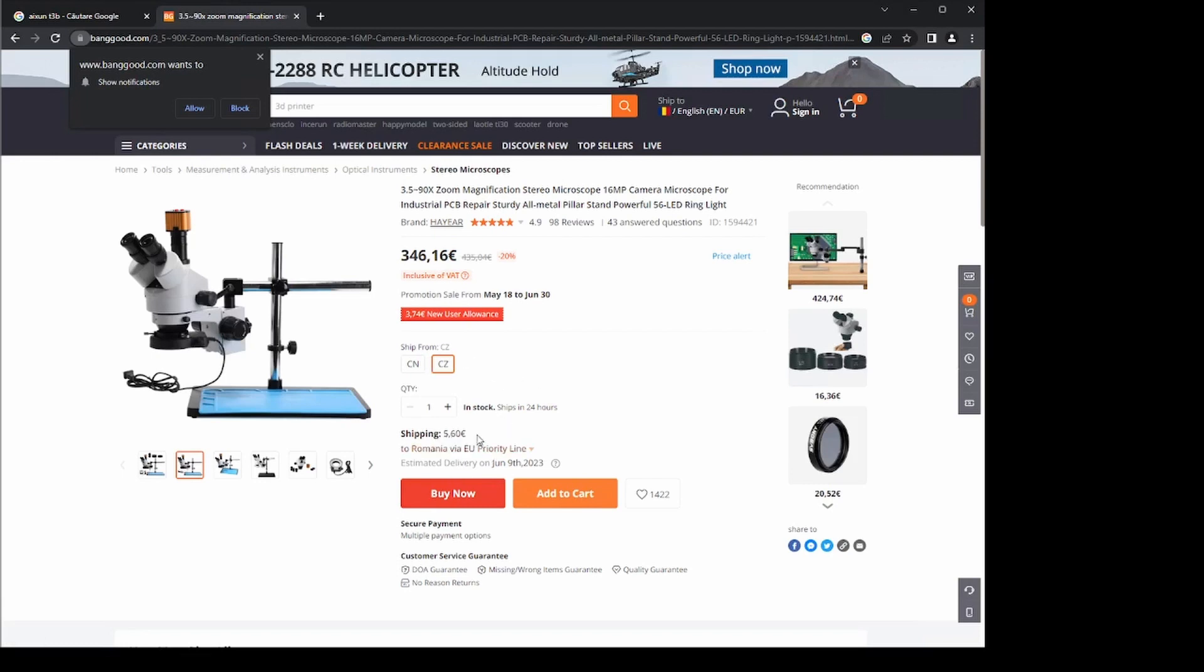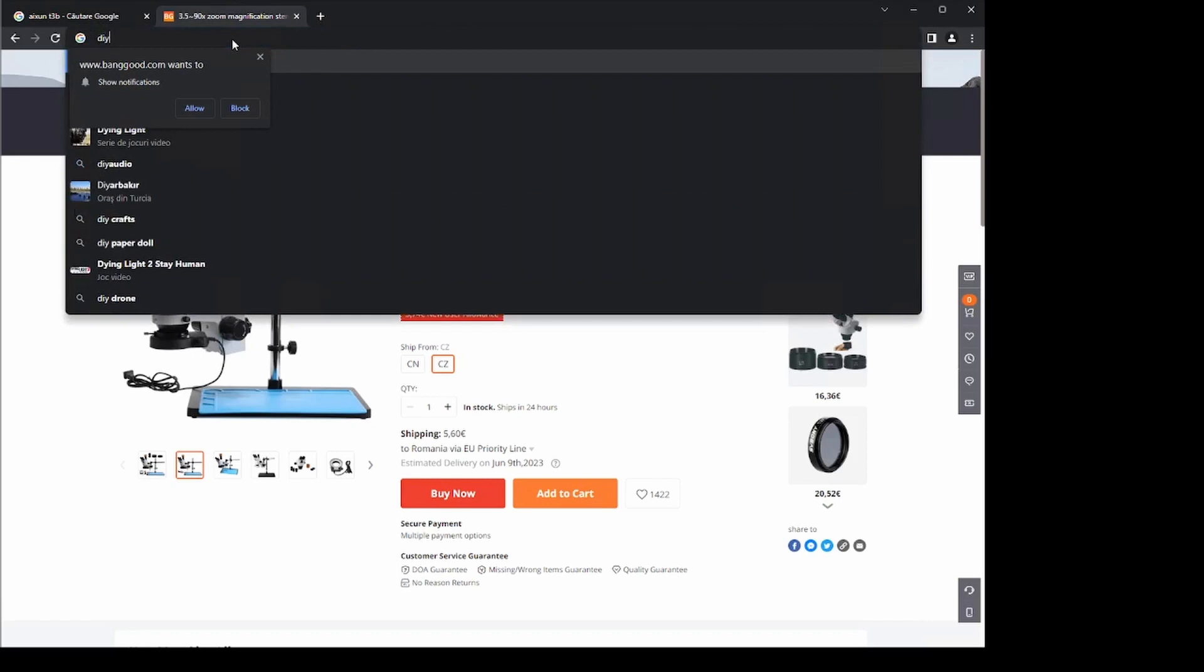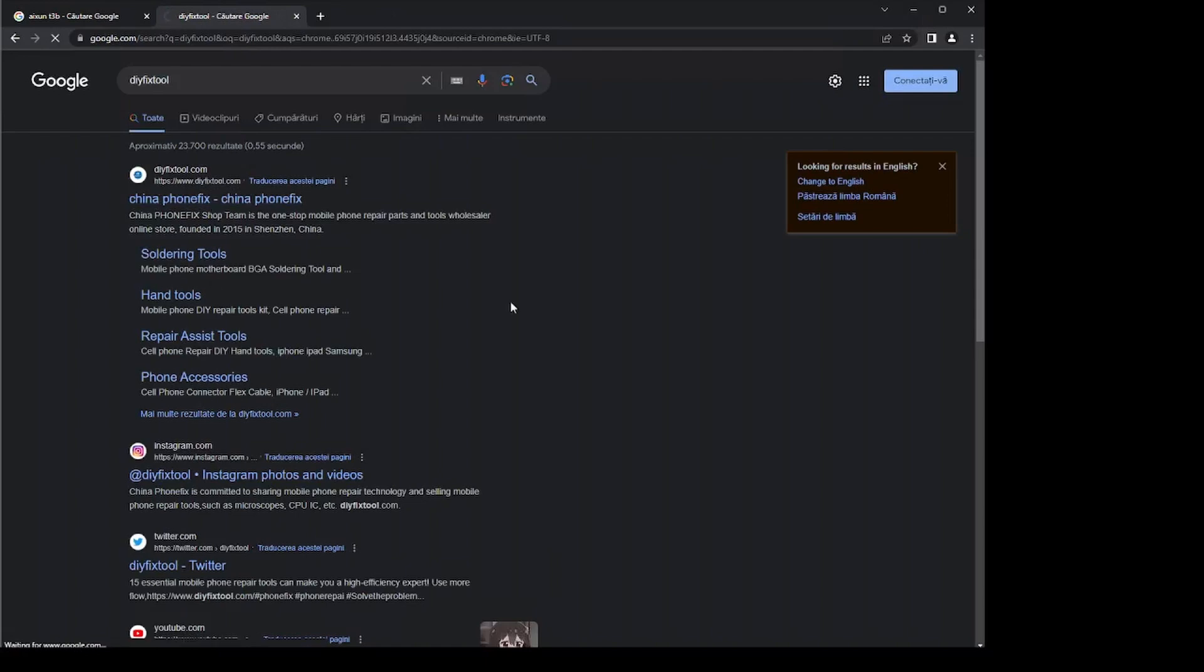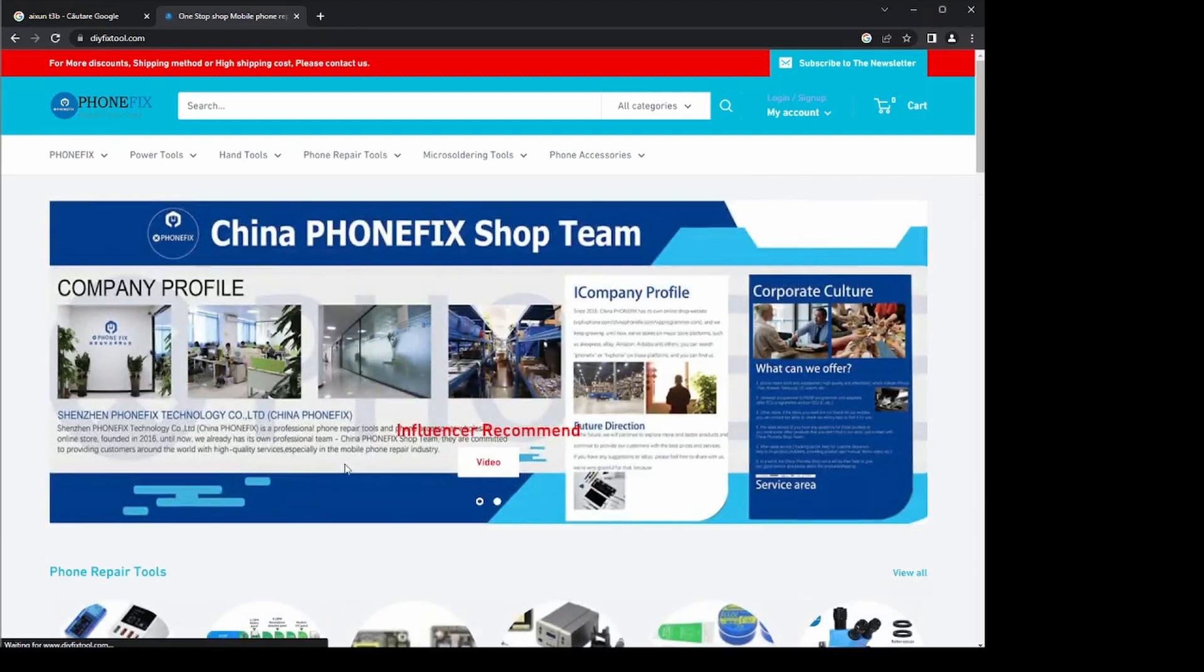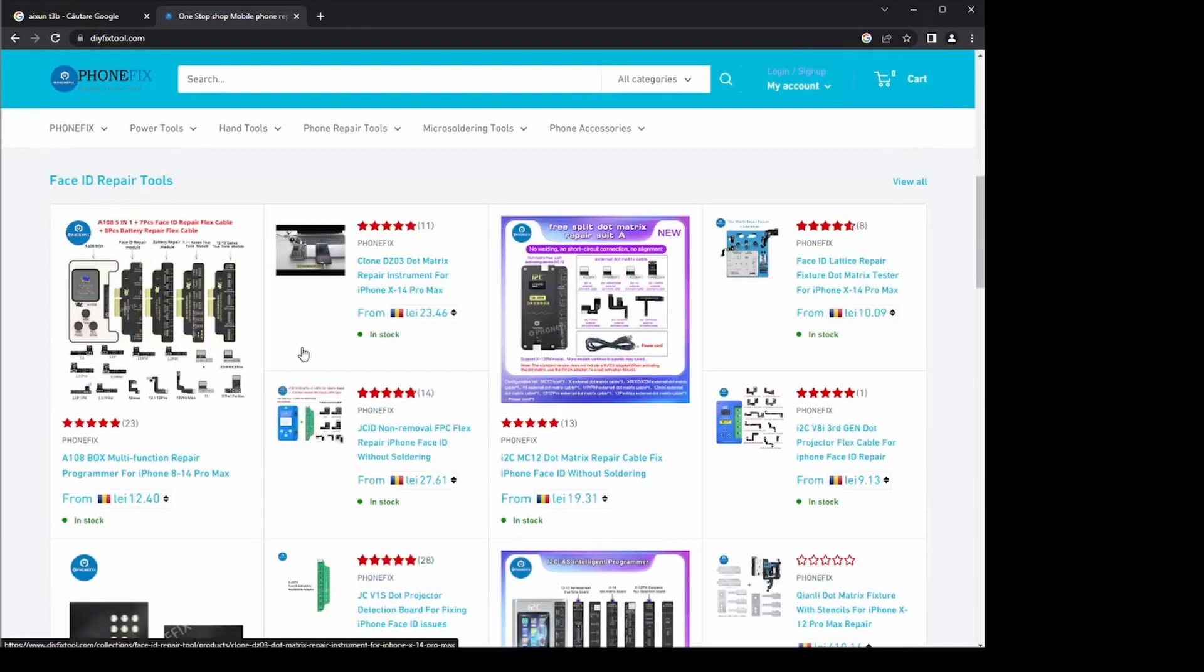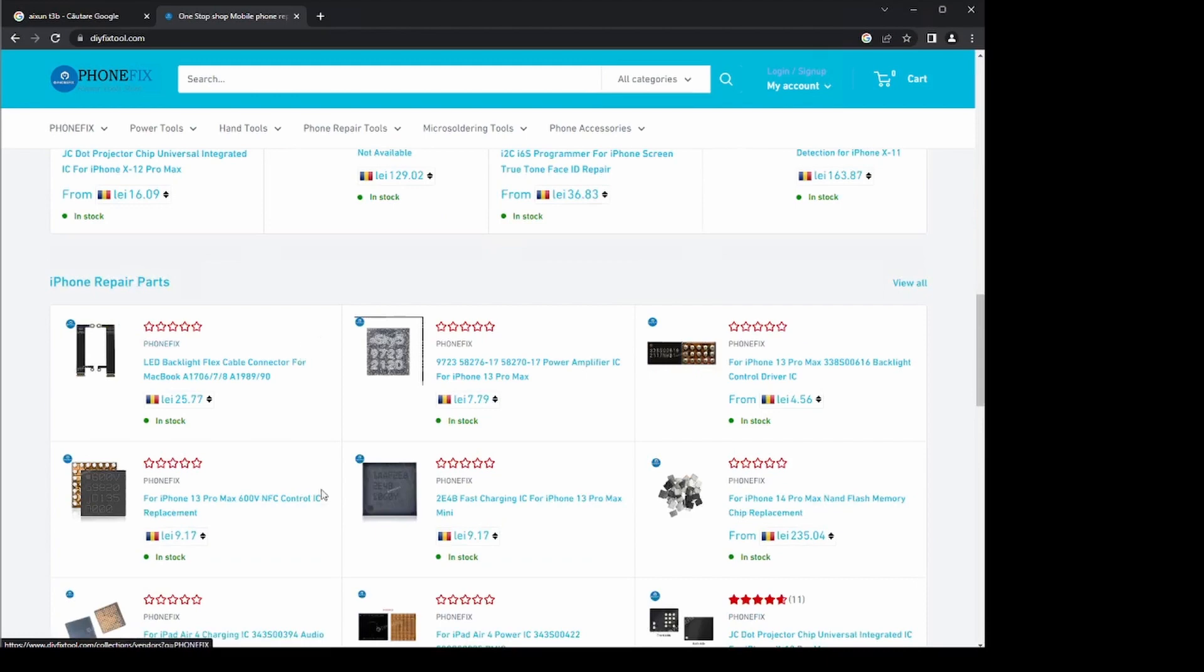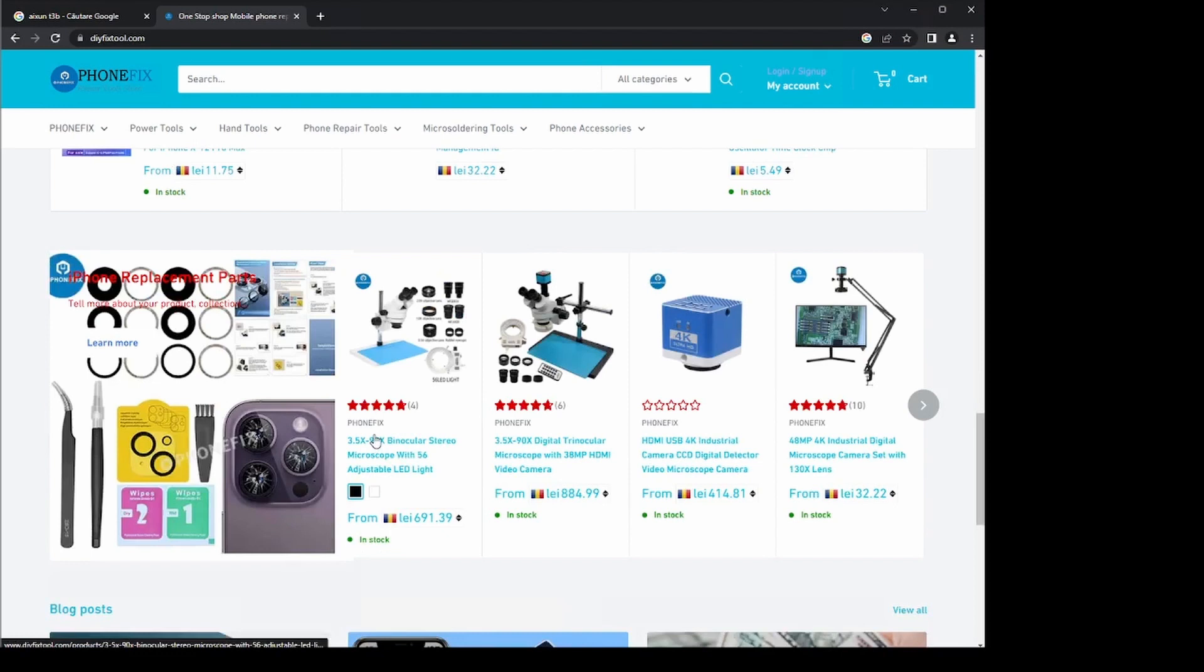Because I don't buy AliExpress, never buy from AliExpress. Buy from trusted sources. When I buy from China, I buy from DIY Fixed Tool, or you may know this as China Phone Fix. You can find here absolutely anything you want as in phone repairs. They ship via FedEx. It's a bit expensive, but it comes in 5 days in Europe. Everything I bought from these guys was great and the service is exceptional. And choose your microscope wisely.